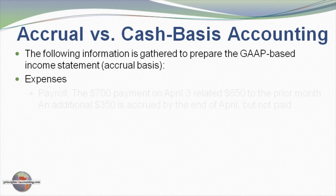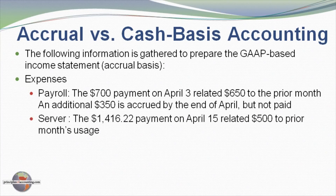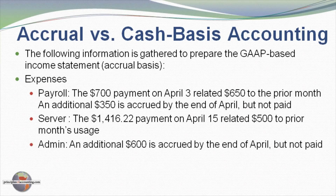On the expense side, there was a $700 payroll on April 3rd, but $650 of that amount related to the prior month. At the end of the month, an additional $350 was due to employees. There was also a $1,416 server payment on April 15th, but $500 of that related to web traffic for the prior month. Administrative costs included $600 of accrued costs at end of month that had not yet been paid.